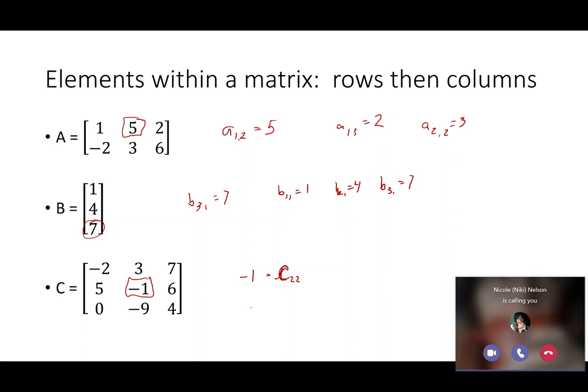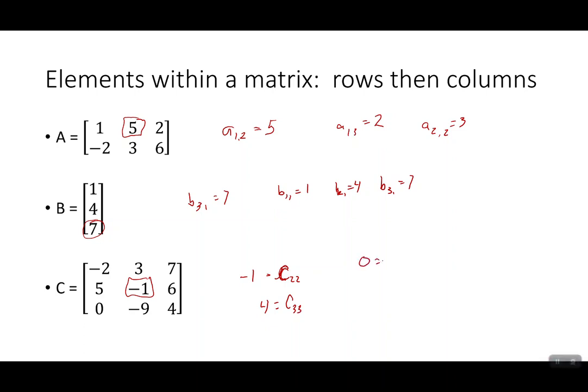And then the four is in C three three, and the zero is in C three one. Third row, first column. The zero is in C three one. That's where that is.